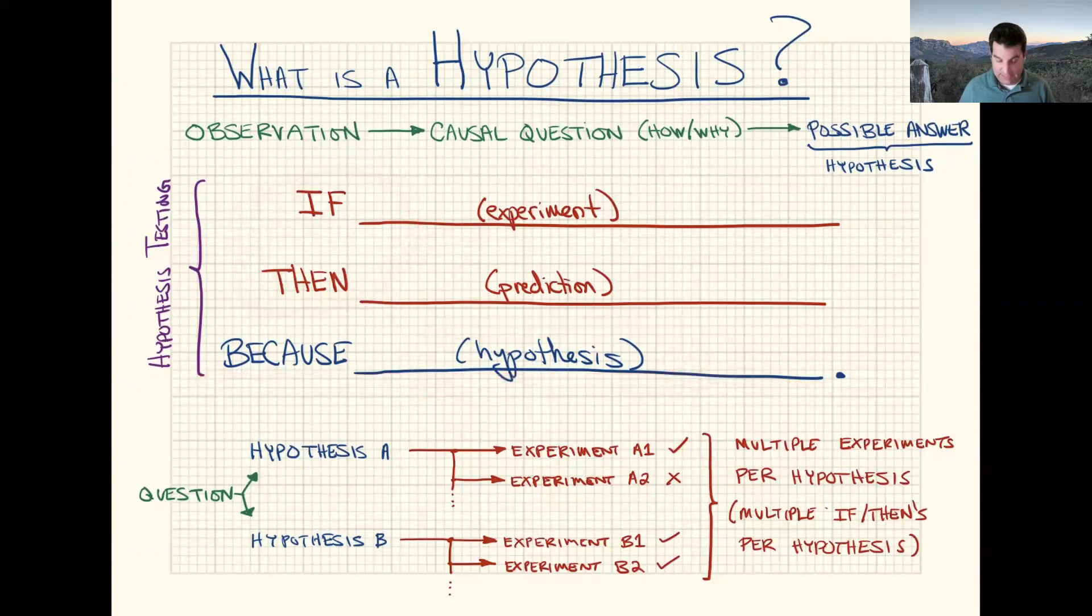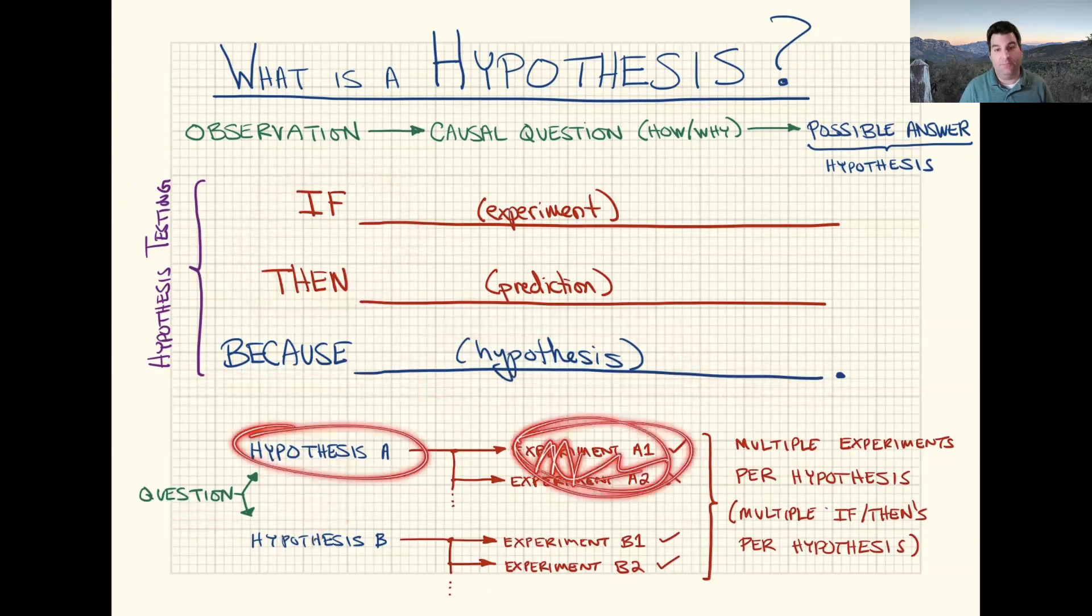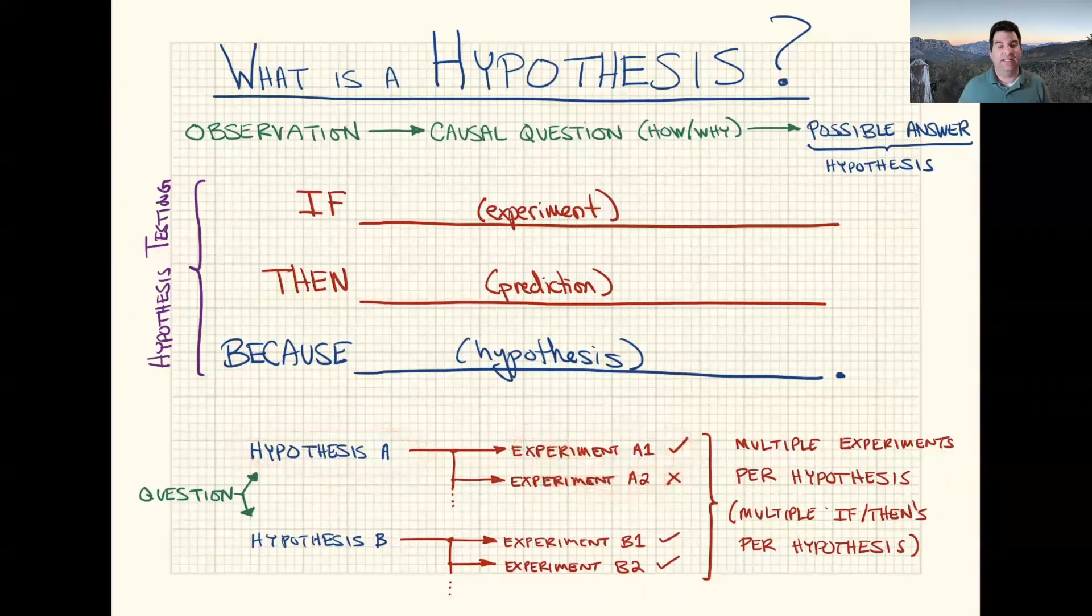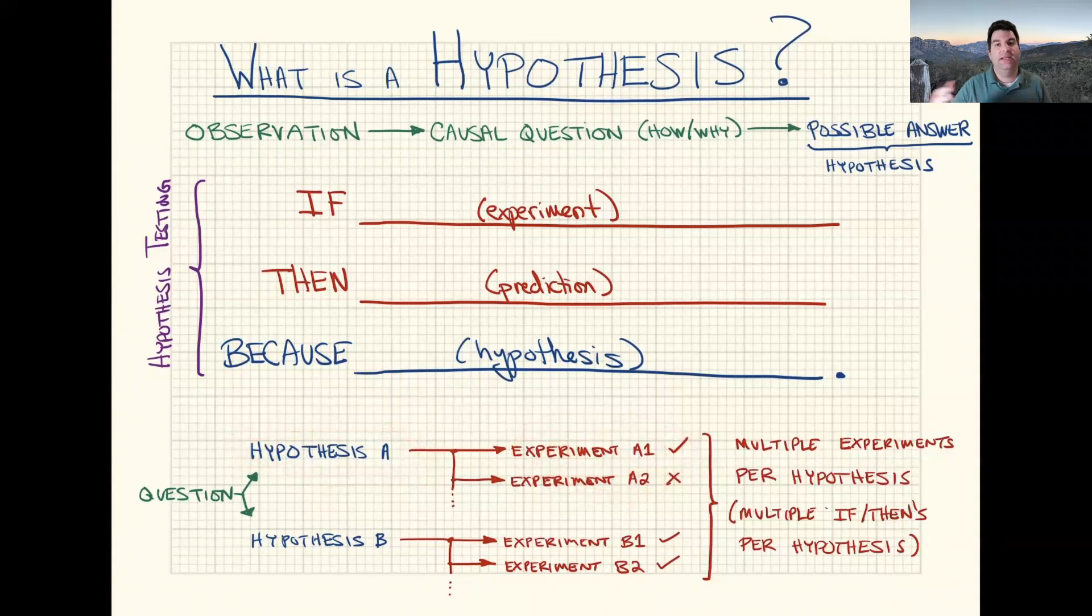One observation, one question from nature, multiple possible answers for each answer, multiple experiments to build up support for it. And if you get lots and lots of support, your hypothesis becomes a theory. So with that in mind, I hope you go out and keep observing nature, keep asking all those questions, and start forming those hypotheses that maybe then you'll go back and start being able to test yourself.